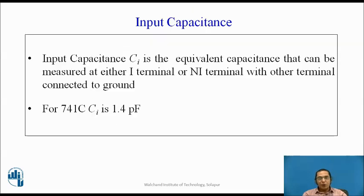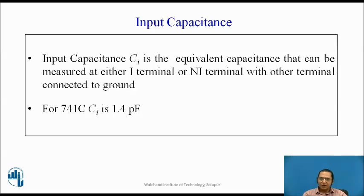The second important DC characteristic is input capacitance. Input capacitance CI is the equivalent capacitance measured at either the inverting or non-inverting terminal, with the other terminal connected to ground. The 741C has a very small input capacitance of 1.4 pF.